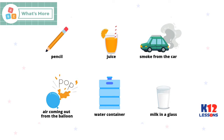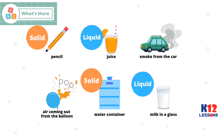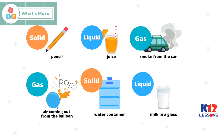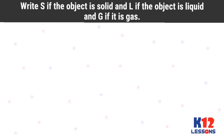Which object is solid? Which object is liquid? Which object is gas? Write S if the object is solid, L if the object is liquid, and G if it is gas.